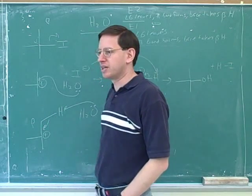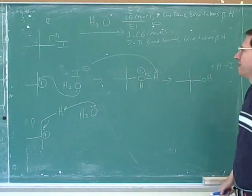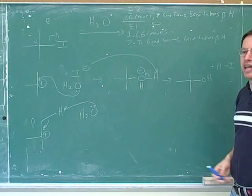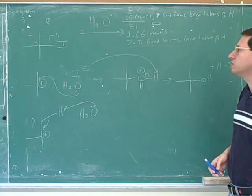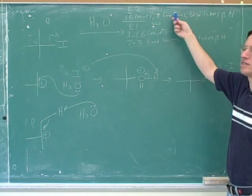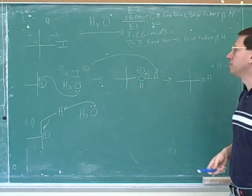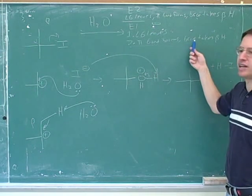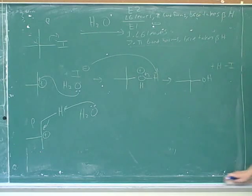So those are the two arrows we put in for the second step. We have the same three arrows for both E1 and E2. It's just that in E2 you draw them all in a single step, whereas in E1 you do the leaving group leaving arrow first, and then the two remaining arrows in the second step.